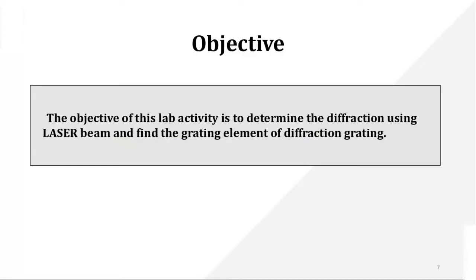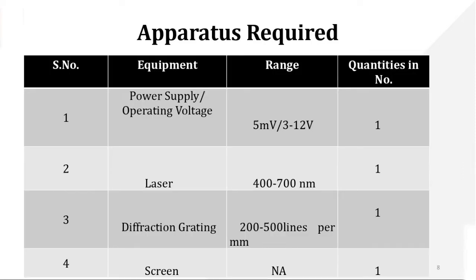Before performing this experiment, you must be aware of what diffraction is, what laser light is, and what a diffraction grating is. These are the apparatus required: we need a power supply for the laser source, a diffraction grating, and a screen. When laser light is incident on the diffraction grating, we get a diffraction pattern which we observe on the screen.